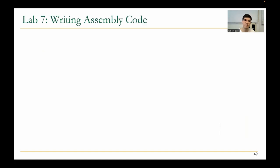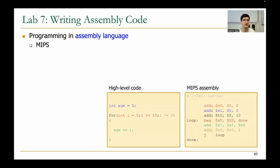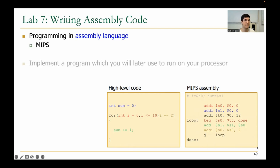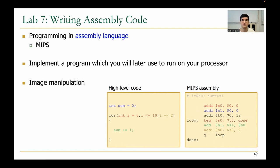In the seventh lab, you will write assembly code using MIPS assembly. You will see two different code blocks that do the same thing — one written in a higher-level language such as C, and the other written in MIPS assembly. You will implement a program that you will also later run on the processor you develop. This program will be doing some image manipulation.